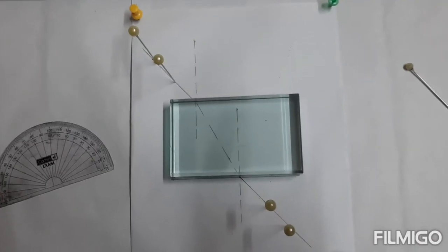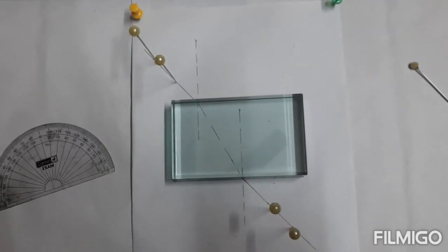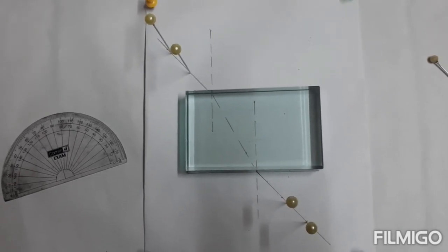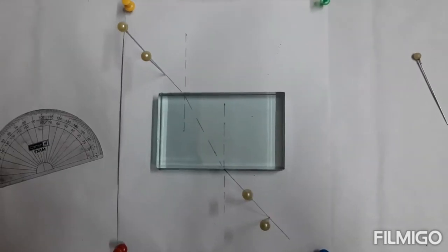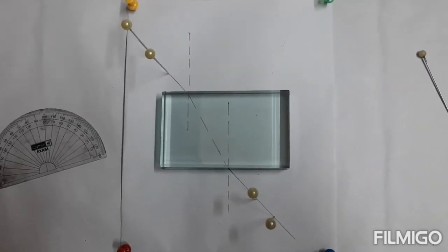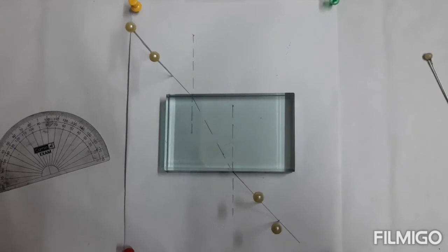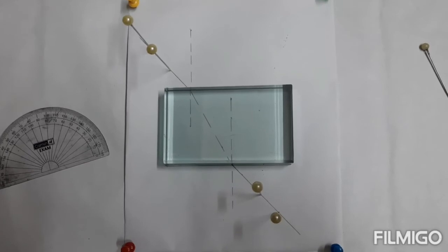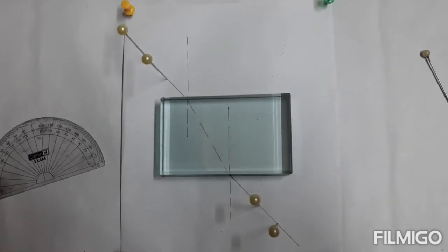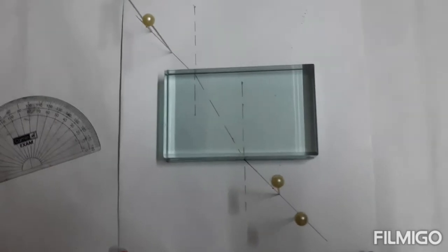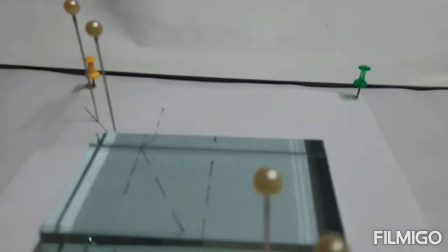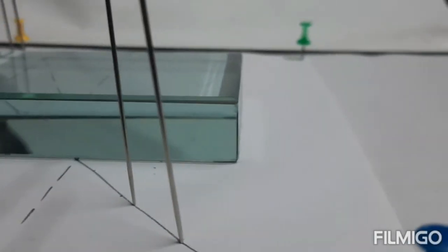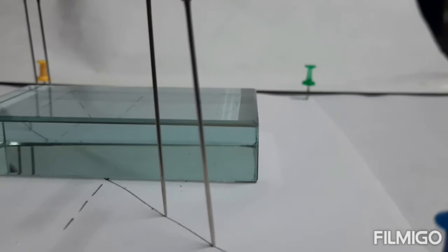We repeat the experiment with I equals to 21 degrees. We repeat the experiment with another incident ray and we will measure the angle of incidence and angle of refraction. Here also we follow the same method and find out the emergent ray.